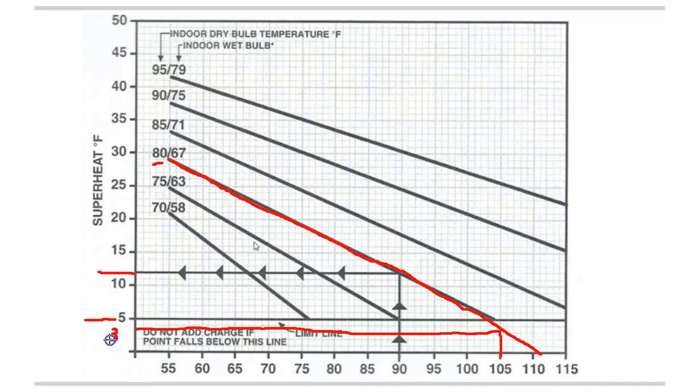The reason that happens is when the outdoor temperature increases, the pressure of the condenser increases, and in a fixed orifice system, if you increase that pressure, it increases the amount of refrigerant that flows through the evaporator coil, so that drives the superheat down.